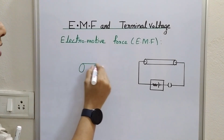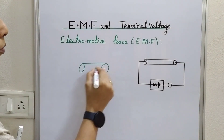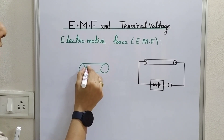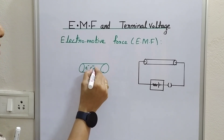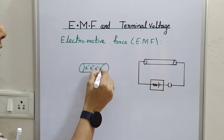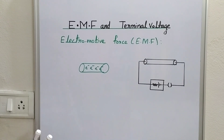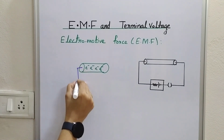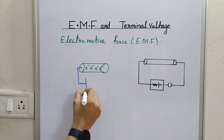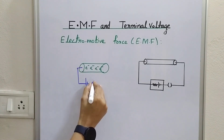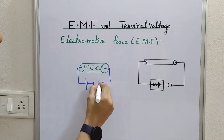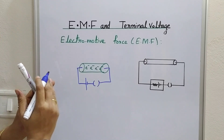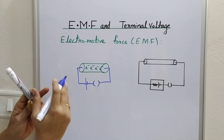A conductor is a substance which has free electric charges in it. When the ends of a conductor are connected to an electric cell across a plug key, the electric charges are mobile.